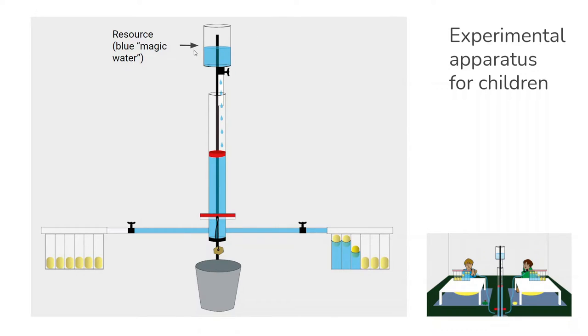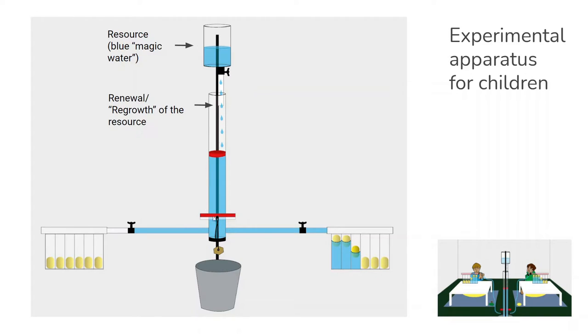There was a bucket up here with a so-called resource, and in this case it was told to children that it was blue magic water. The water would drip into this cylinder at a certain rate. We can think of it as the renewal rate of the resource dripping into this cylinder.